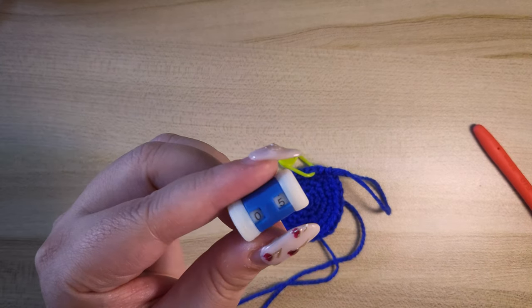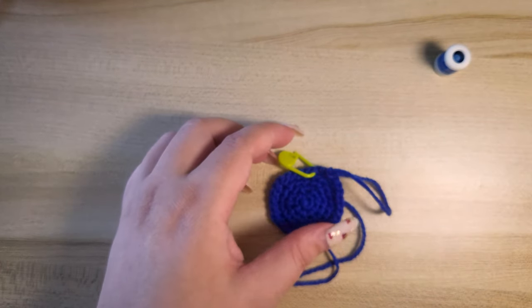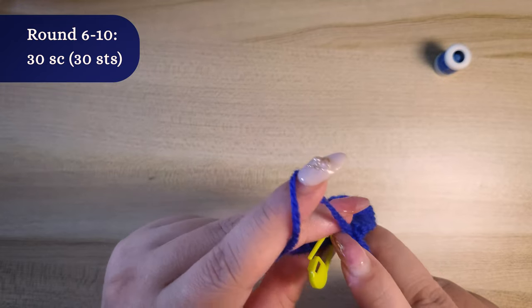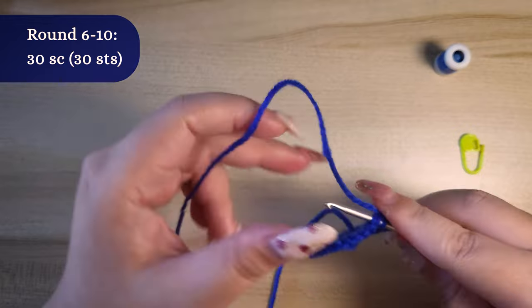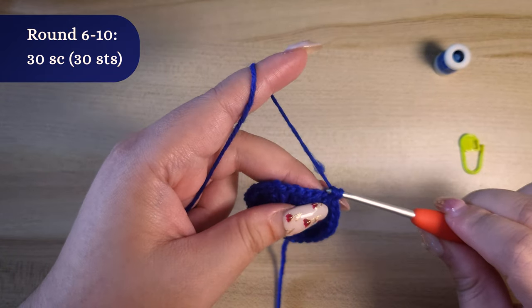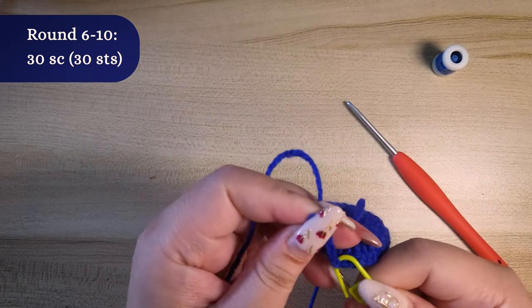This is where we can use our stitch counter. In round 6 to round 10, we will be doing 30 single crochet. So that will be total of 30 stitches each round. Grab your stitch marker to mark the first stitch in the round.